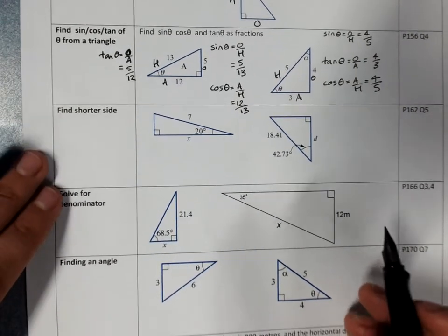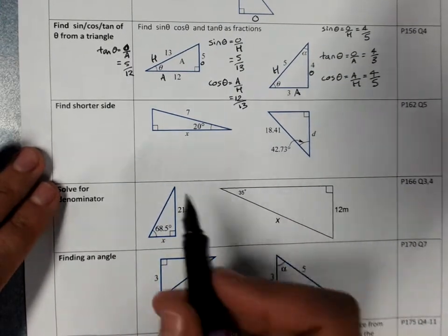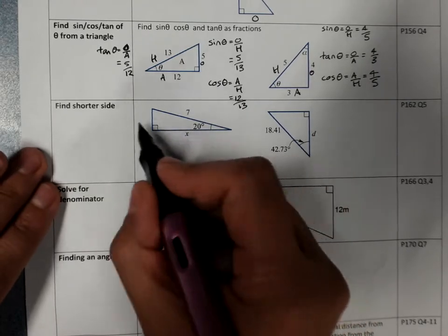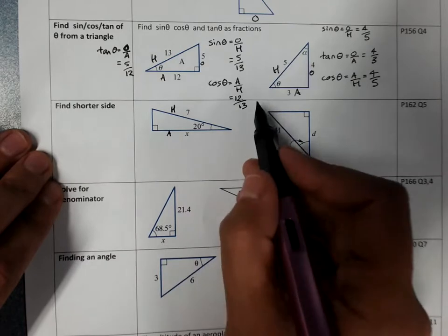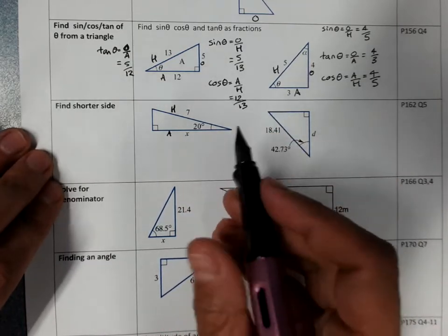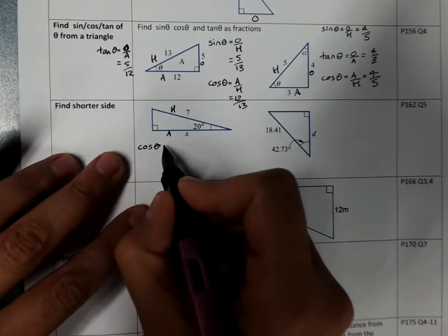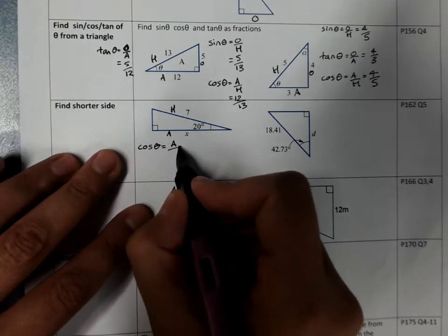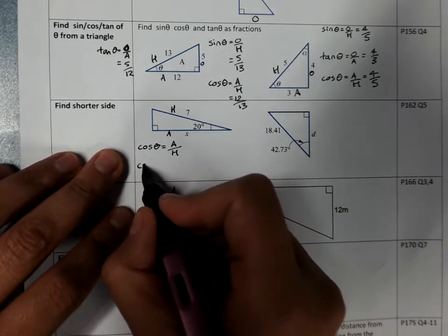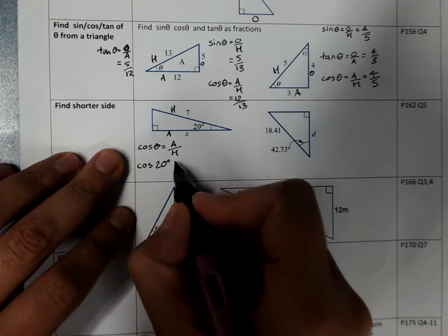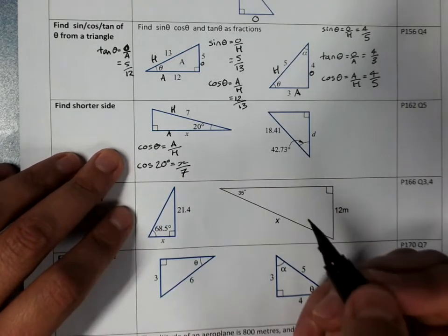Now we're finding sides. So this should have four lines of working for each of these. Label our sides that have something on them. I've got the adjacent and the hypotenuse. That means I'm using cos, because that's got the adjacent and the hypotenuse. Write the ratio, including theta.